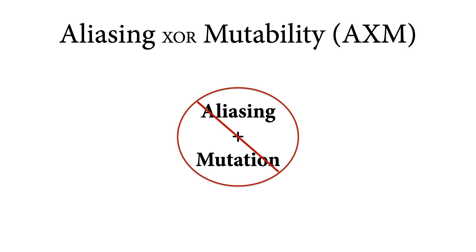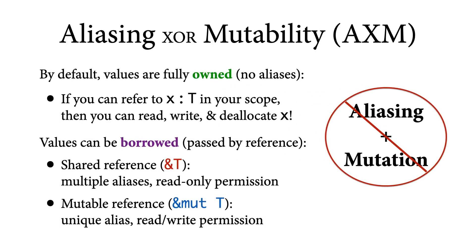Rust's type system enforces a discipline known as aliasing XOR mutability, or AXM, which says that there can either be multiple aliases or references to a value, or it can be mutable, but it can't be both at the same time. To enforce this discipline, Rust relies on the concept of ownership. By default, values are fully owned, which means that if you can refer to some value X of type T in your scope, then you know there are no other aliases to it in the rest of the program, so you can read, write, or even deallocate X without worrying about dangling references or data races.